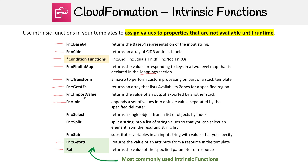Then you have Join. So if you have an array and you want to turn it into a string where values are delimited by a comma, you'd use Join. Then you have Select — if you have an array and you want to select an object from that list by providing its index, you use Select.